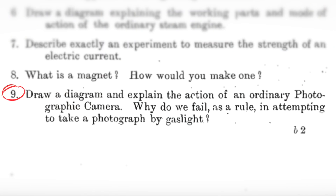Draw a diagram and explain the action of an ordinary photographic camera. Why do we fail as a rule in attempting to take a photograph by gaslight? In 2019, we have CMOS sensors or CCD sensors — basically, a photon of light hits a pixel, creates some voltage, and you convert that into an image.